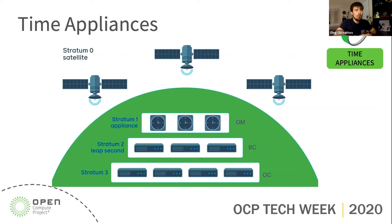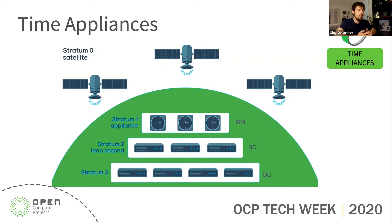In the NTP world, stratum two comes into play, which handles the leap second, or if the scale is small it can already run production code on those servers. There may be up to 15 strata, but usually they're used up to stratum three. You can draw a parallel between NTP and PTP: stratum one appliance is the GM, stratum two is BC or boundary clock, and stratum three is OC or ordinary clock — whatever you prefer.